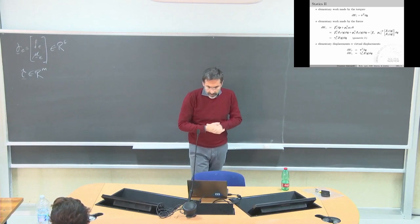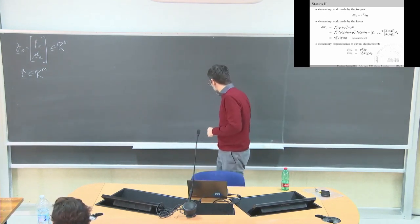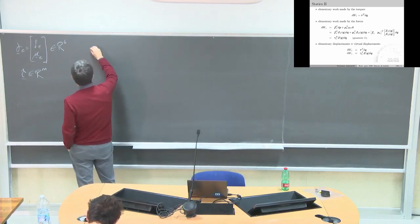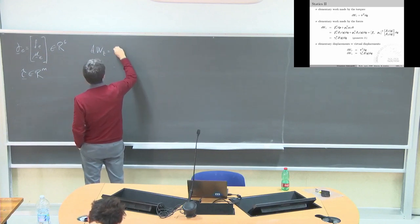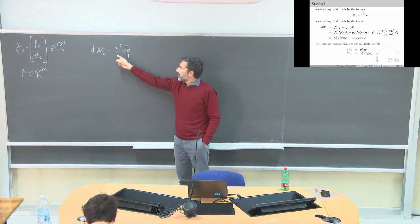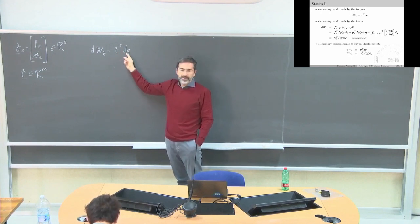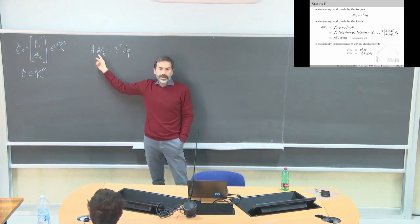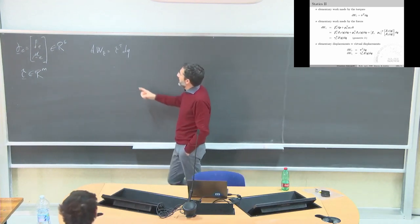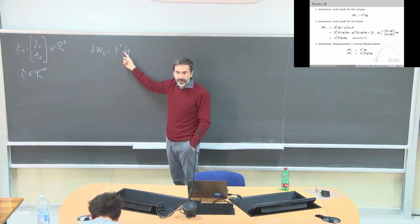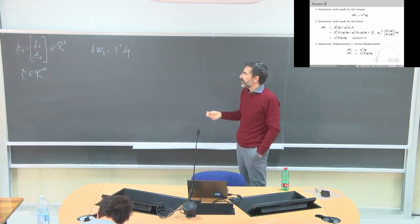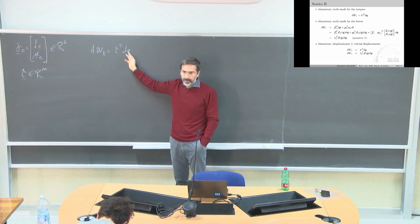We are going to derive this by the principle of virtual work. The elementary work made by the torque is tau-transpose multiplied by delta-q. This is a vector n-by-1 transpose times a vector n-by-1, so this is clearly a scalar. This is the elementary work made by the torque for a small displacement of the joint. Work is force by displacement; for a rotational degree of freedom it is torque by angular displacement, and the unit measurement is correct.